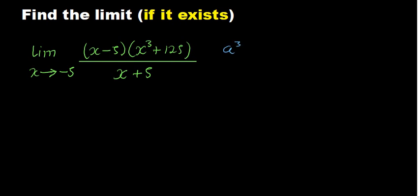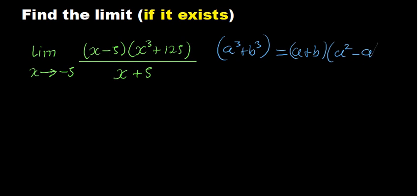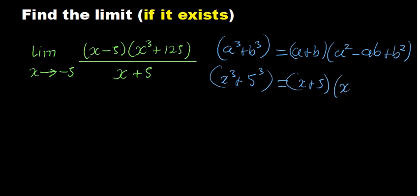Another method to get the same value of minus 750 is to factor the expression. Recall the sum of cubes identity: a³ + b³ = (a + b)(a² − ab + b²). Since 125 = 5³, the expression x³ + 125 can be written as x³ + 5³, which factors as (x + 5)(x² − 5x + 25).